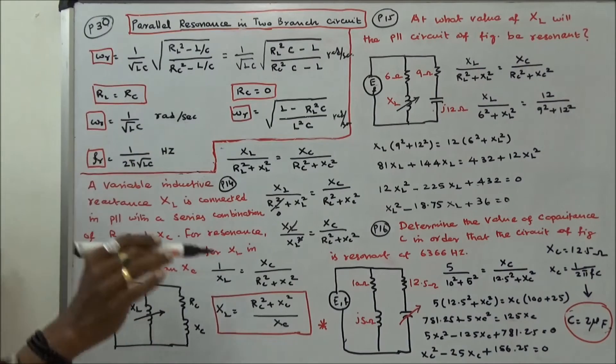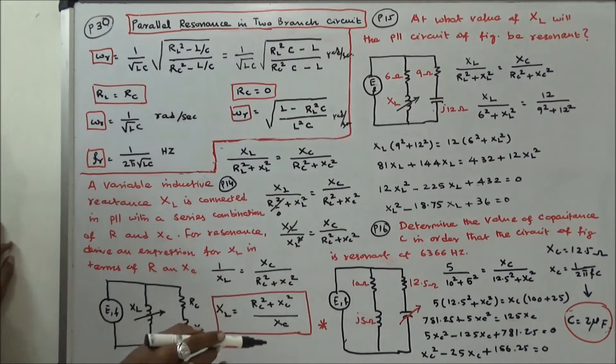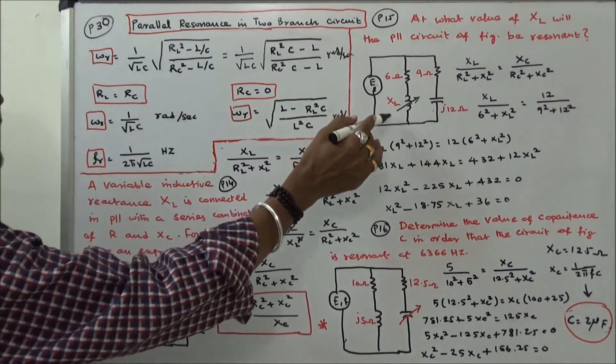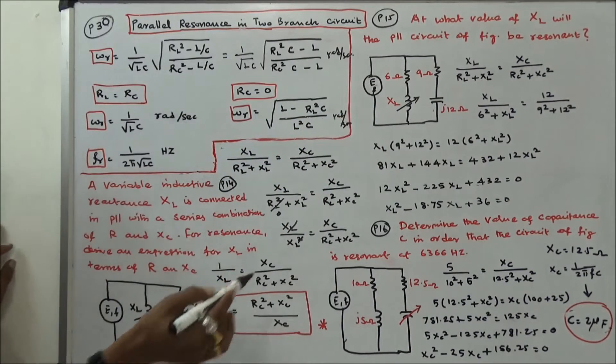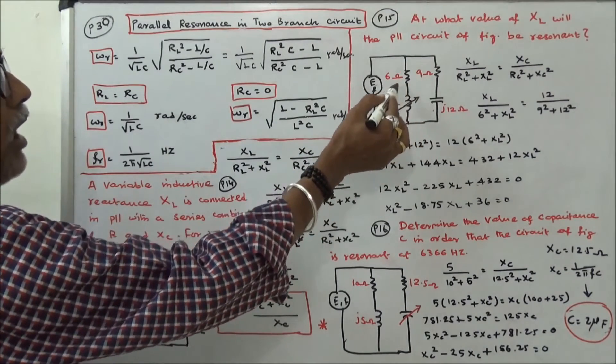The second problem is at what value of Xl will the parallel circuit of figure be resonant? Here Xe value is given, Rc value is given, Rl value is given.